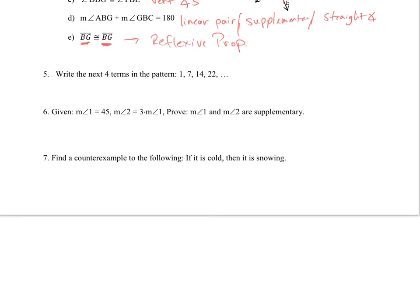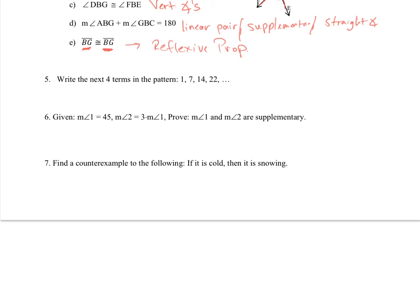Number 5: write the next four terms in the pattern. Let's see what's happening. From 1 to 7, I added 6. From 7 to 14, I added 7. Then adding 8 — so it looks like there's an addition pattern where I add one more each time. Adding 9 gives 31, adding 10 gives 41, adding 11 gives 52, and adding 12 gives 64. Those are the next four terms.